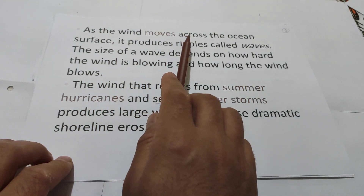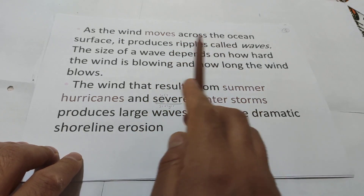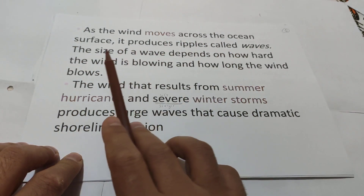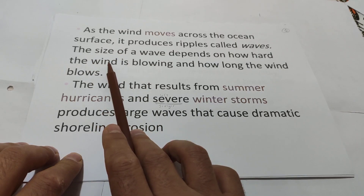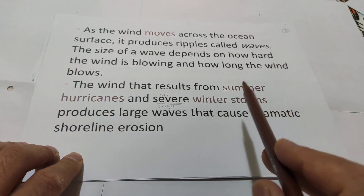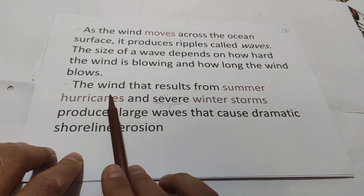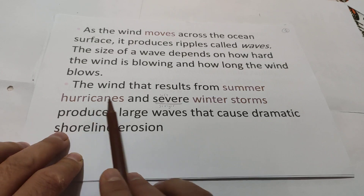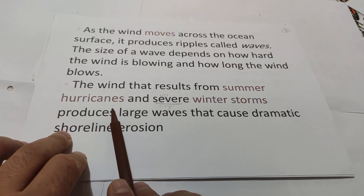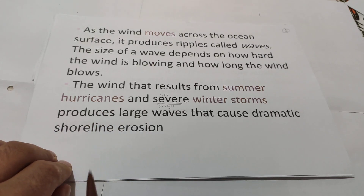As wind moves across the ocean surface, it produces ripples. The size of a wave depends on how hard and how long the wind blows. Strong winds that result from summer storms are called hurricanes. Hurricanes and severe winter storms produce large waves that cause dramatic shoreline erosion.